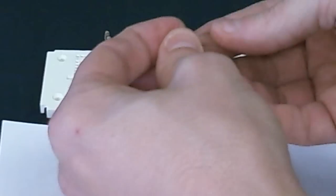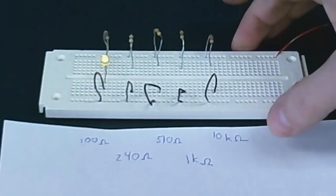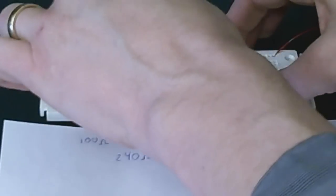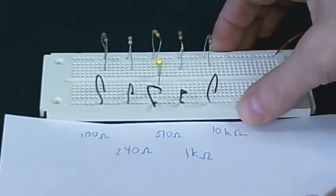Finally, here's a yellow LED. There we go with 100 ohms. Nice and bright. 240 ohms. 510 ohms. 1 kiloohm.